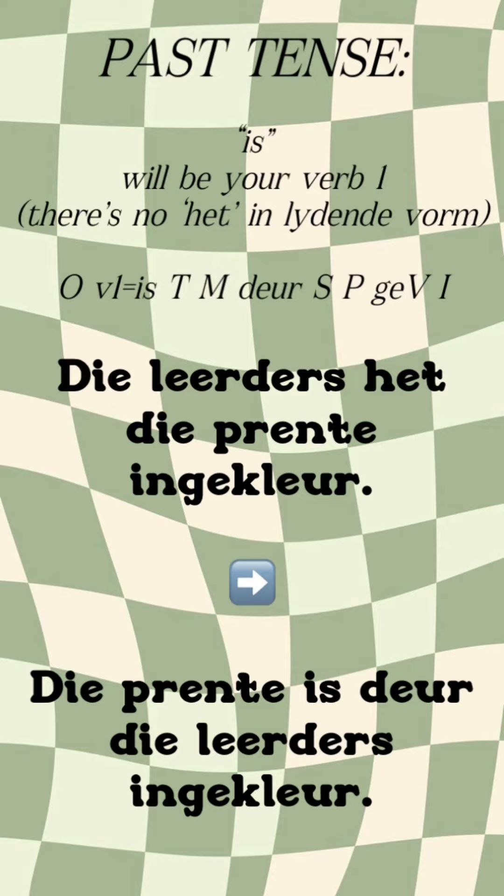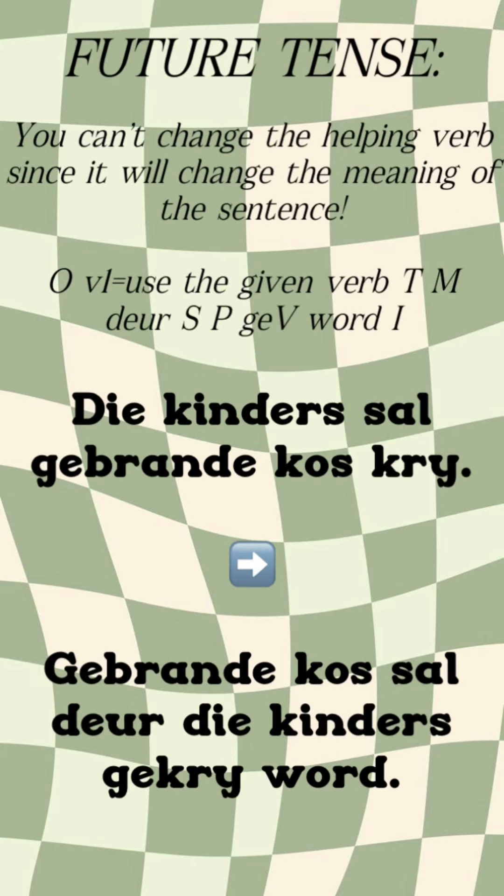So 'Die leiers het die prente ingekleur' becomes 'Die prente is deur die leiers ingekleur.' Plus point — there's already a 'ge' in your verb two.